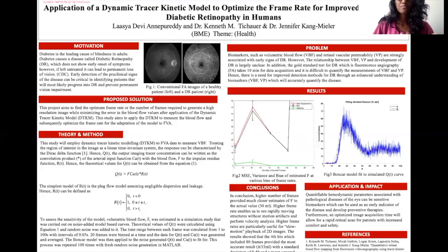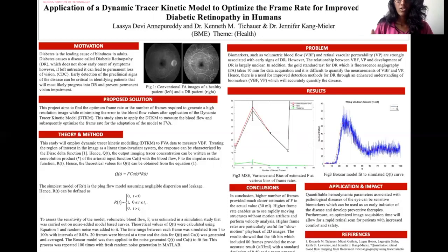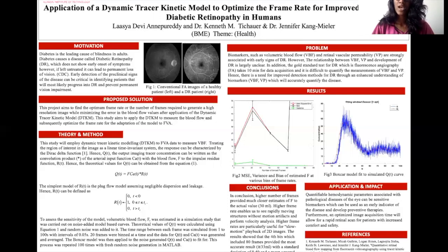This can be used to identify the volumetric blood flow. The simplest model of Rt is the plug flow model, which is essentially a unit step function, and this assumption can be made when there's negligible dispersion or leakage. The method then involves assessing the sensitivity of this model by determining the estimates for volumetric blood flow in a simulation study carried out on noise-added model-based curves. Theoretical values of Qt were calculated using equation 1 and random noise was added to it. The time range for each frame was simulated from 1 second to 100 seconds with intervals of 0.05 seconds, and 20 frames were binned at a time.